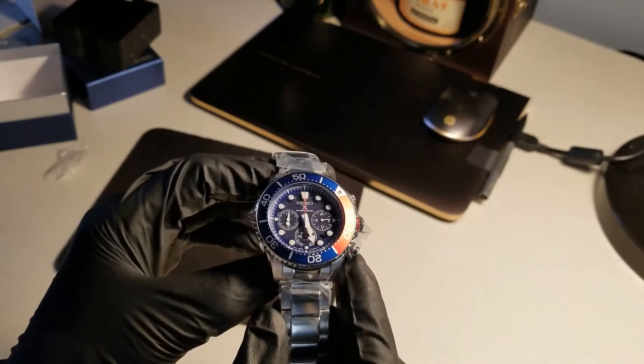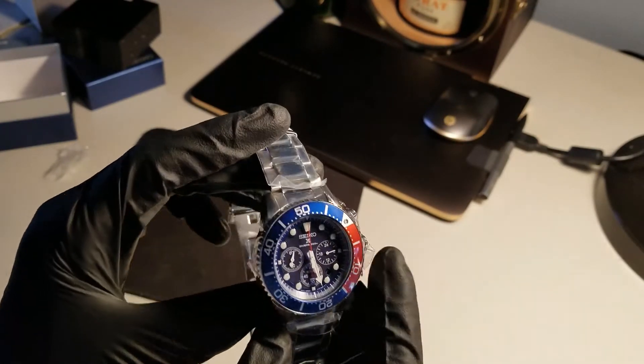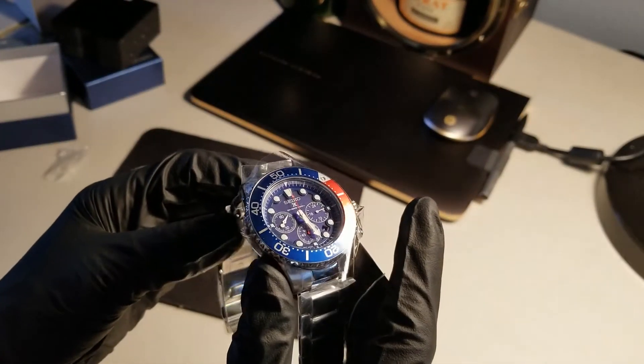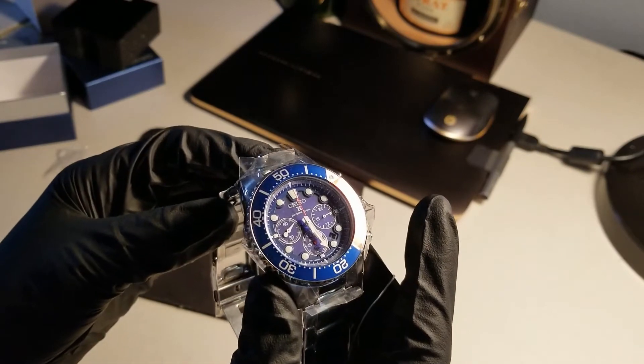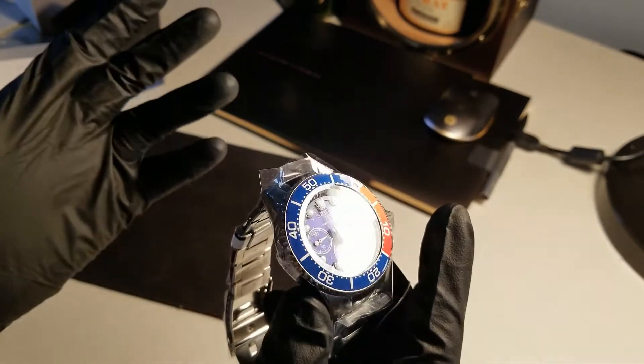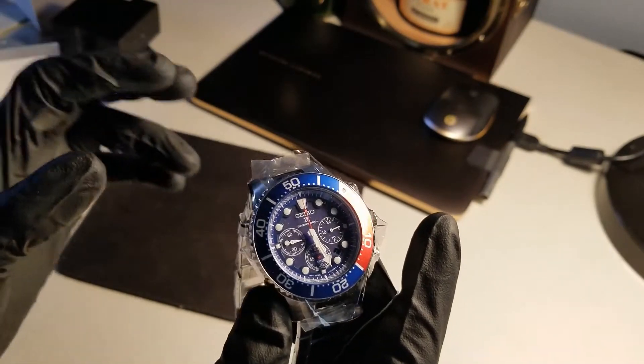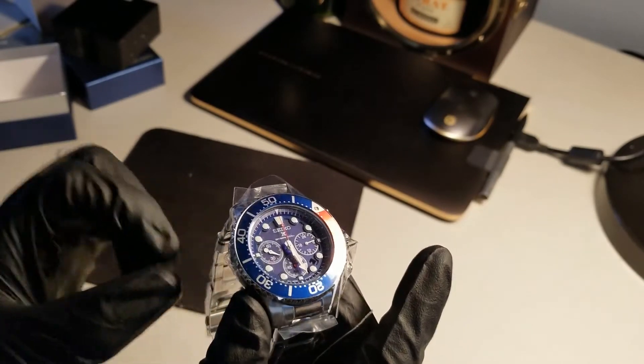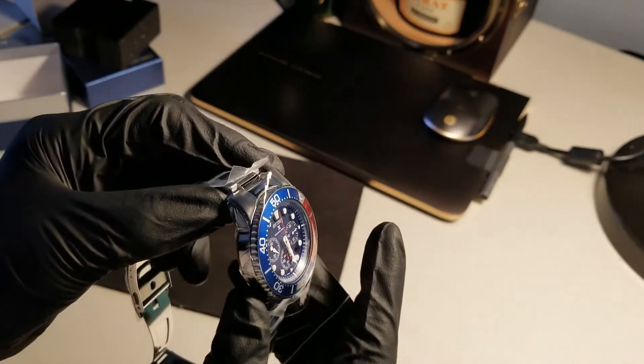Right away we can see that it's new, which it should be. Sometimes we have that paranoia from ordering from third party sellers that aren't big time authorized sellers like Amazon or Seiko itself, so we get hesitant. But everything looks legit.